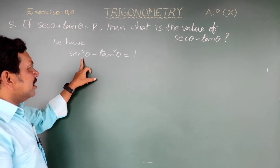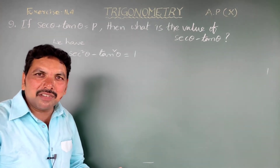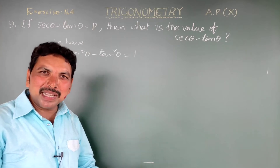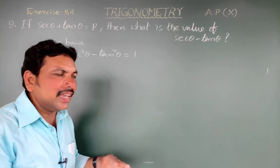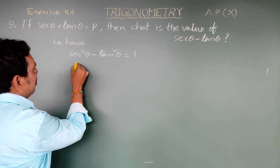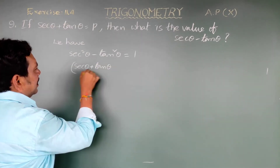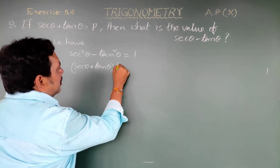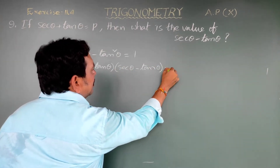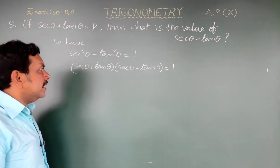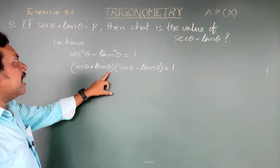We have secant square theta minus tan square theta equals 1. This is in the form of a square minus b square, which equals (a plus b) into (a minus b). So this becomes (secant theta plus tan theta) into (secant theta minus tan theta) equals 1.